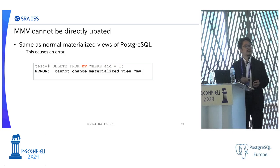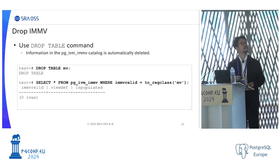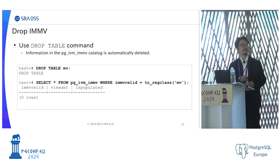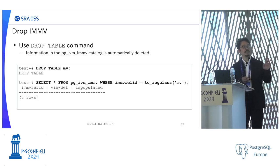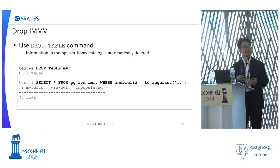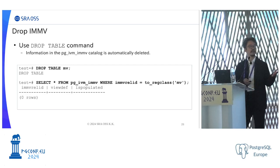If you try to update it directly, an error is raised: 'cannot change materialized view.' To drop an IMMV, you can use the DROP TABLE command. This drops the view as a normal table, but also the entry in the pg_ivm_immv catalog is automatically removed — this is done via hook functions.